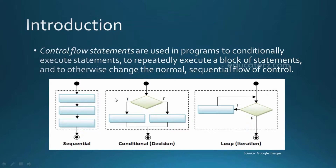Coming to control flow statements — these are used to make the program flow in a controlled manner. Whenever you want to run a particular part of your code multiple times, or take decisions and execute a piece of code only when certain conditions are true, control flow statements are very useful. Conditional statements are used whenever you want to take a decision based on some condition.